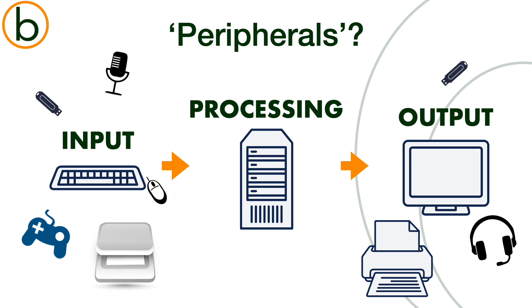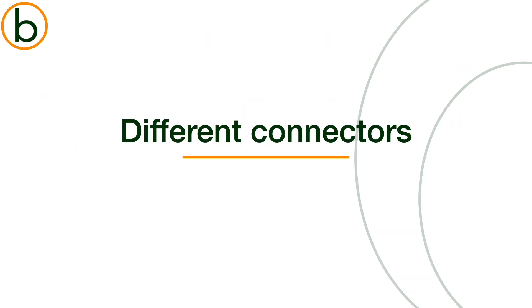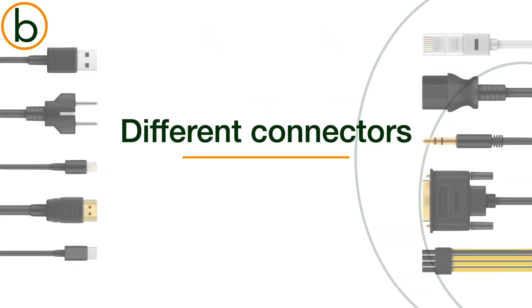You even have peripherals for both, such as a USB flash drive. To transfer data from input peripherals to the CPU, and to send processed information from the CPU to output peripherals, we need to connect these peripherals to the CPU. To do that, there are a lot of different connectors. Understanding these connectors is essential for correctly connecting peripherals and ensuring smooth communication within your computer setup. In this video, we will go over some historical connectors. Not all of these are still in use, but it's still a good idea to know what was in use in old computer systems.